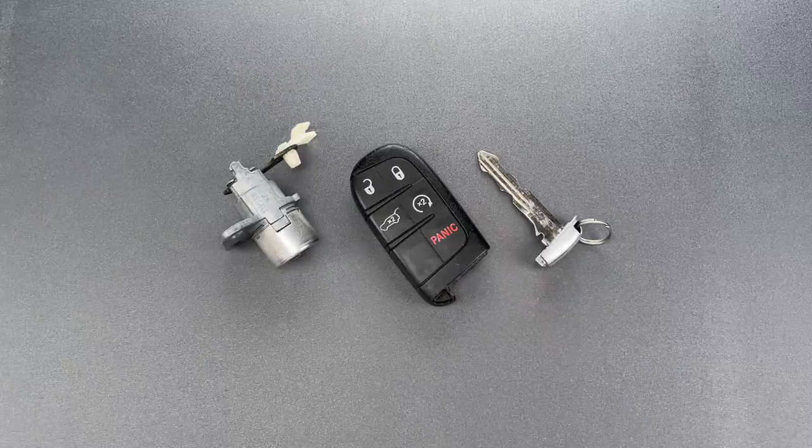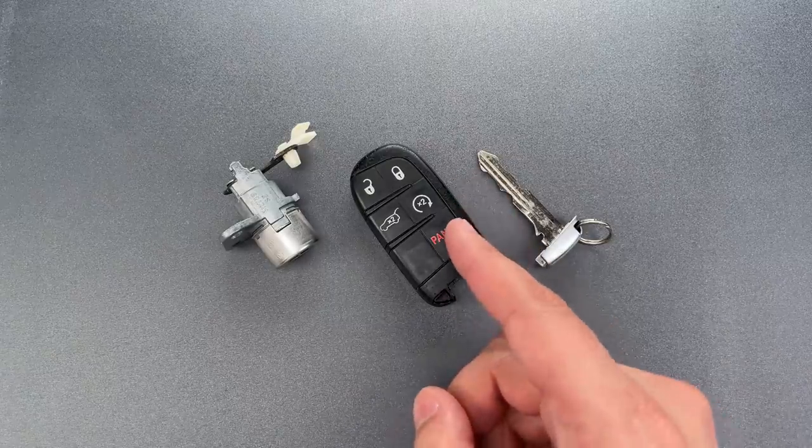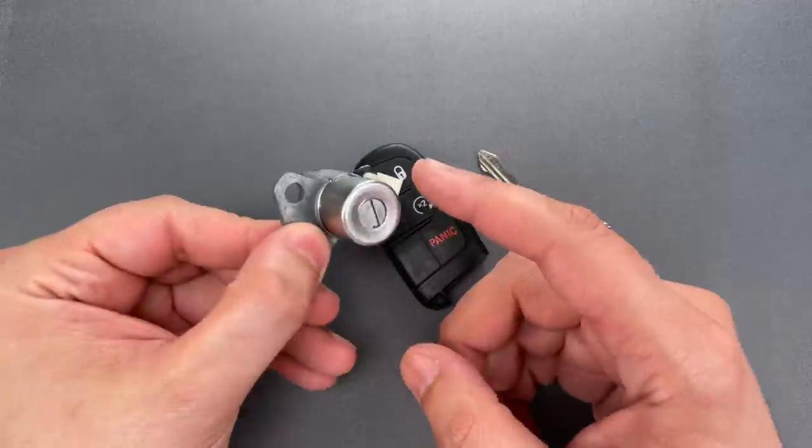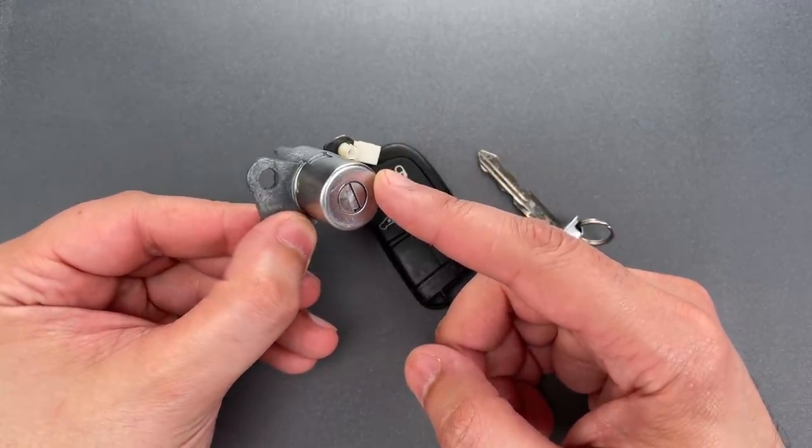This is the Lockpicking Lawyer and today I'm continuing my Monday tradition of featuring an auto lock. What you see here is the driver's side door lock for a 2018 Jeep Grand Cherokee.